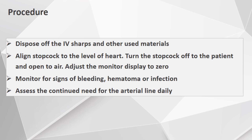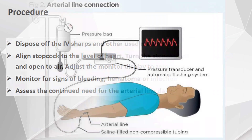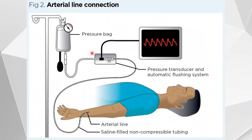Dispose of the sharps and other used materials. Arrange the stopcock to the level of the heart, turn the stopcock off to the patient and open to air, and adjust the monitor display to zero. Monitor for any signs of bleeding, hematoma, or infection, and assess for the continual need for the arterial line daily. In this diagram, you can see the arterial line connection: the pressure transducer and automatic flushing system, the pressure tubing connected to the pressure bag, and the other tubing connected to the arterial line catheter, with cables running to the monitor.